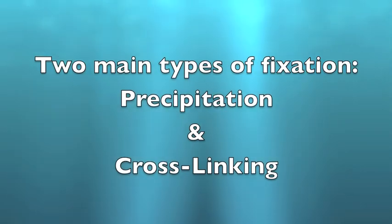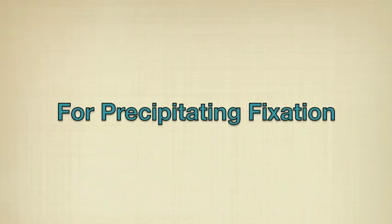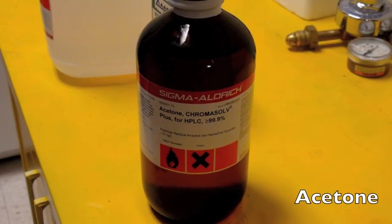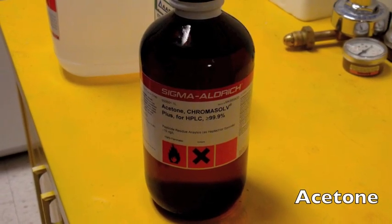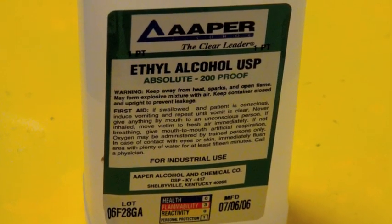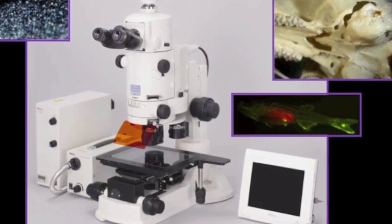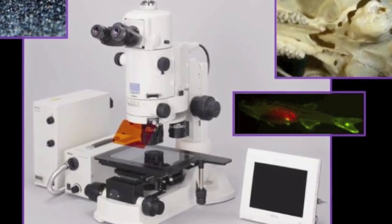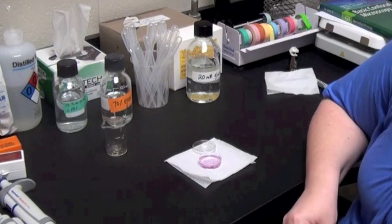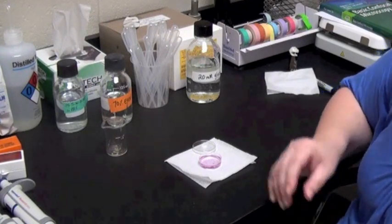The two main types of fixation are precipitating fixation and cross-linking fixation. For precipitating fixation we normally use some type of organic solvent such as acetone or some type of alcohol, either ethanol or methanol. These types of fixatives are really good for things like wide-field microscopy because they are able to enhance or increase the level of antigenicity.